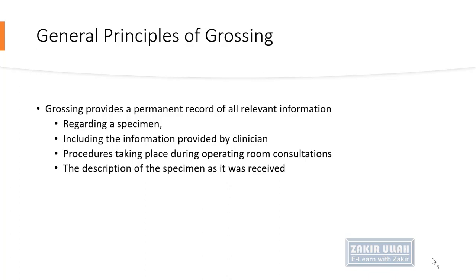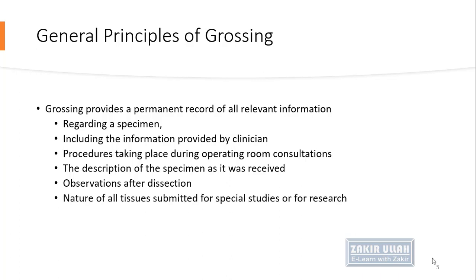The description of the specimen as it was received — whether in a small or large container, whether it was well-labeled or not labeled — is mentioned in the gross examination. Observations after dissection, what was the first impression of the pathologist, and what was observed after dissecting the specimen, are also recorded. The nature of all tissues submitted for special studies or research, along with a description of the microscopic sections taken, are part of the record.